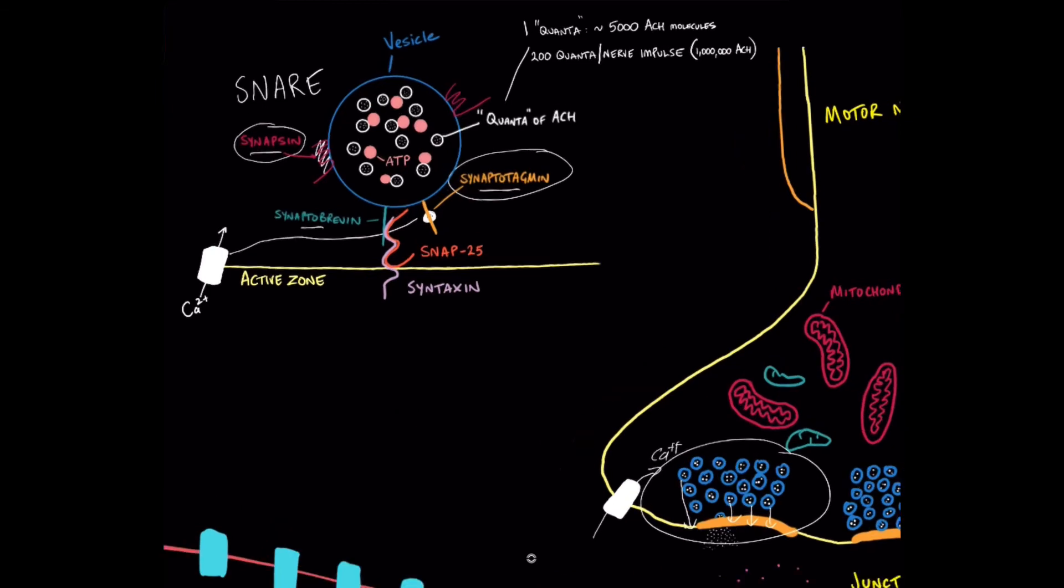The key part of this process is the interaction of synaptobrevin down here with the SNAP25 and syntaxin complex. And what happens when those proteins interact is that the membranes of the vesicle and the membrane of the active zone start to combine, and then that allows the contents of the vesicle to be released into the junctional cleft by exocytosis.